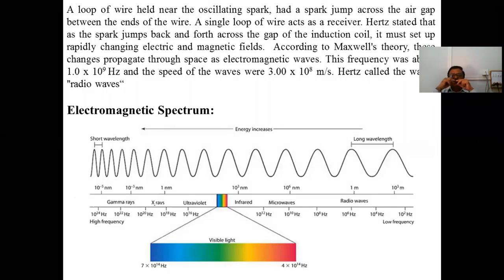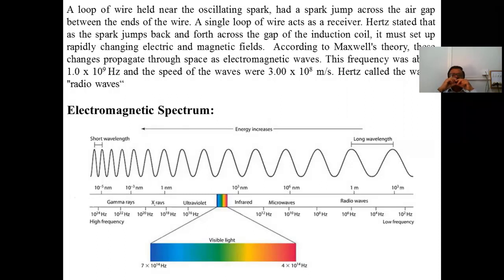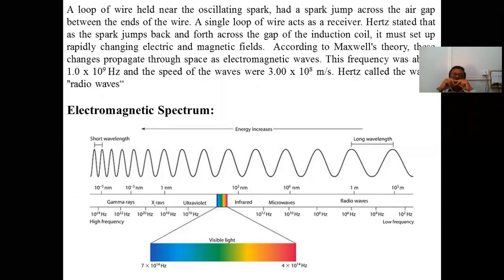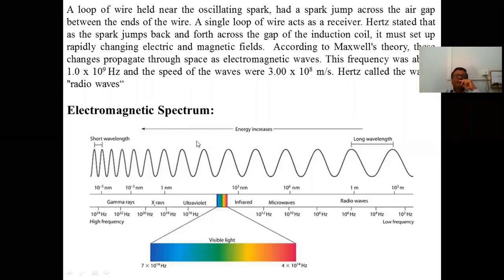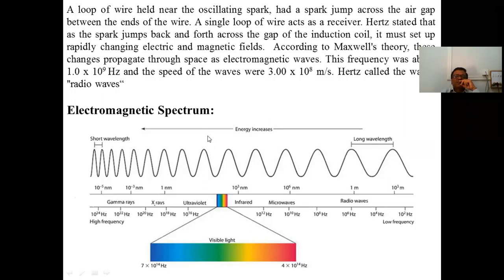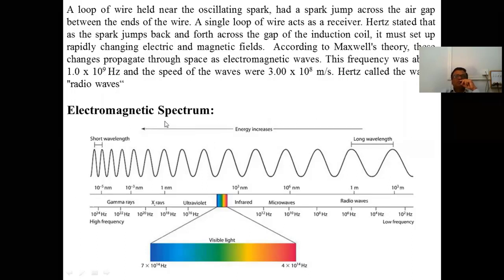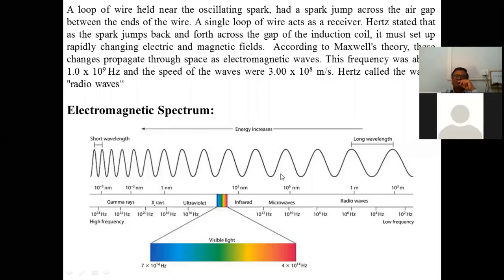There are different types of electromagnetic waves. All electromagnetic waves are the same in that they have an electric field and a magnetic field, with energy equally distributed between them. The difference between them is that they have different wavelengths and different frequencies. According to their wavelength and frequency, the electromagnetic waves are classified into different types. This classification is called the electromagnetic spectrum.